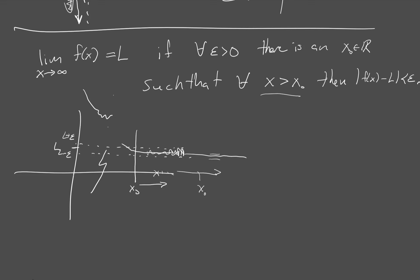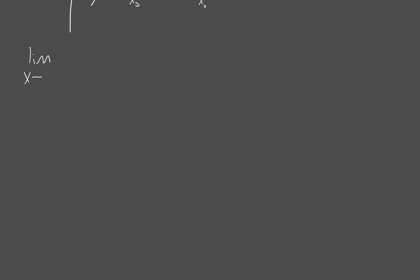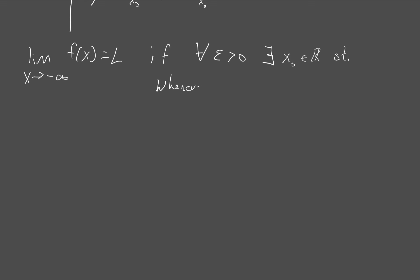A similar idea applies going towards negative infinity. The limit as x goes to negative infinity of f(x) equals L if for all epsilon greater than zero, there exists an x-naught in the reals such that whenever x is less than x-naught — because I'm trying to go to the left — we get the absolute value of f(x) minus L is less than epsilon.